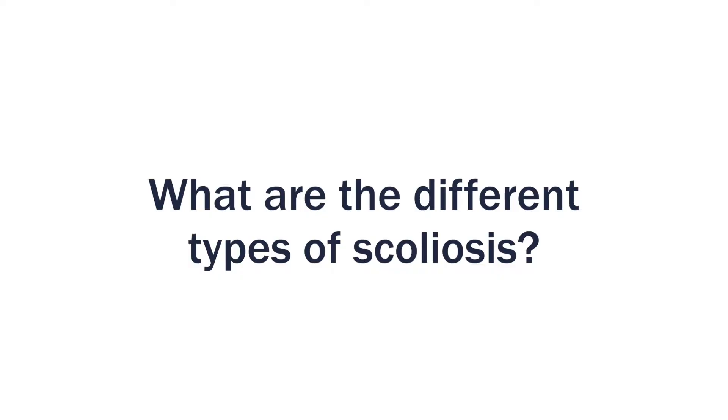June is National Scoliosis Awareness Month, and I'm here to answer a few questions about scoliosis. What are the different types of scoliosis? Scoliosis is a general term that refers to a curvature of the spine when looking at the spine from the front or the back. It can uncommonly occur very early in life due to abnormal formation or separation of the bones in the spine. In children and adolescents, the most common form by far is what is called adolescent idiopathic scoliosis, or AIS.